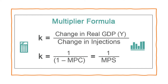Another way to write the formula is K equals 1 upon (1 minus MPC), where MPC is marginal propensity to consume — it shows the relationship between consumption and income, i.e., with an increase in income, what change in consumption takes place. If MPS is given, MPC can be calculated as 1 minus MPS, and thus K also equals 1 upon MPS. MPS is marginal propensity to save — it shows the relationship between saving and income.